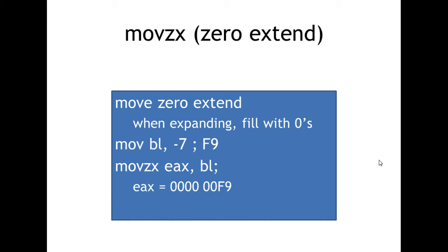As a refresher, when we deal with zero extend and sine extend, what we're worried about is when we're taking data and moving it from a smaller to a larger destination — maybe from a byte to a word or a byte to a double word. What we're concerned about is when we take that number, do we need to extend the sign bit? The sign bit is the most significant bit. When a number is stored in two's complement, if the MSB is one it's negative; if it's zero, it's positive. If we move something smaller into something larger and don't extend that sign bit, we'll lose the signage of that number.